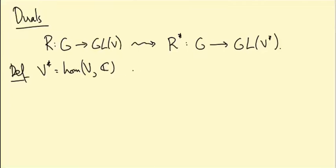Equivalently you could define it in the following way: if you think of V as a space of column vectors by picking a basis of V, then V dual will be the corresponding set of row vectors.